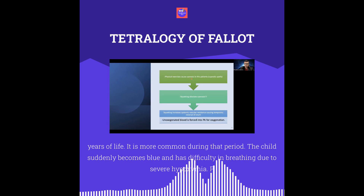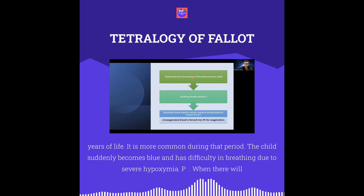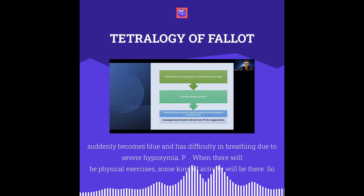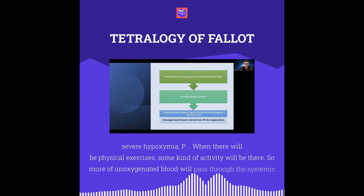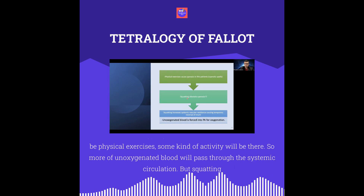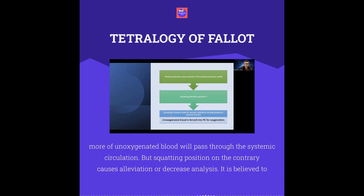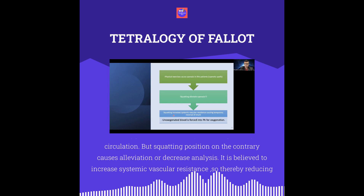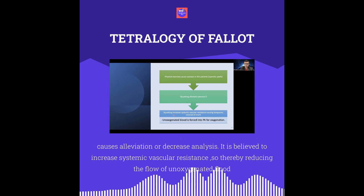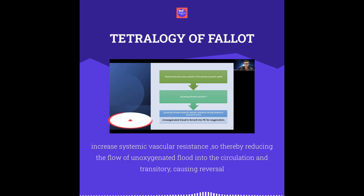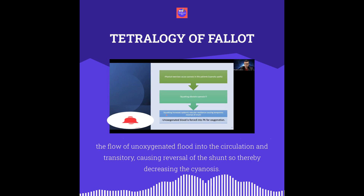Physical exercise causes cyanosis in these patients — the cyanosis is more pronounced with activity, as more unoxygenated blood passes into the systemic circulation. Conversely, squatting position alleviates or decreases cyanosis. Squatting is believed to increase systemic vascular resistance, thereby reducing the flow of unoxygenated blood into the circulation and transiently causing reversal of the shunt, thus decreasing cyanosis.